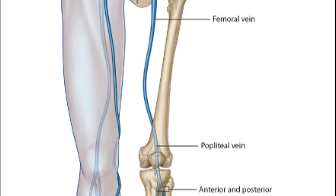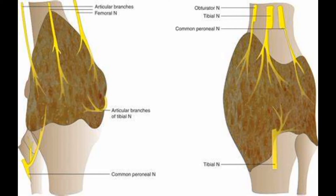The venous drainage follows the arteries, so you've got the popliteal vein draining into the femoral vein. For innervation, remember four nerves: you've got the femoral nerve, the obturator nerve from the top, the common peroneal, and the tibial nerve.